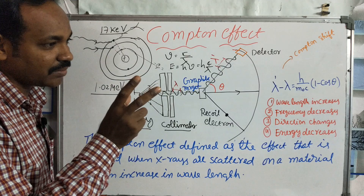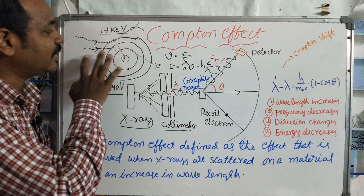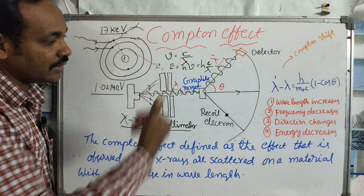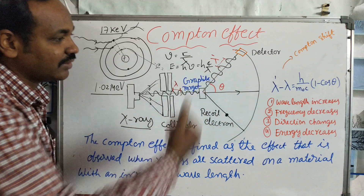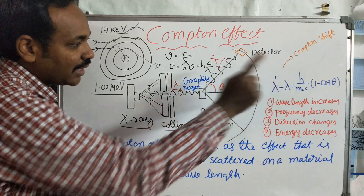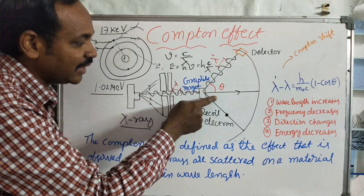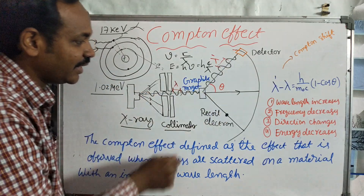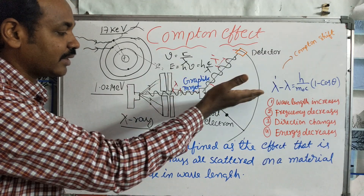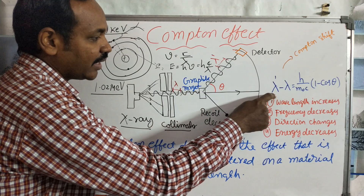Compared to pair production and the photoelectric effect, the Compton Effect occurs when X-rays scatter with energy decrease and wavelength increase. We can write: lambda dash minus lambda — this is the Compton shift. The Compton shift depends on the angle between the incident X-ray and the scattered X-ray. So lambda dash minus lambda is the equation relating incident wavelength to scattered wavelength at scattering angle theta.